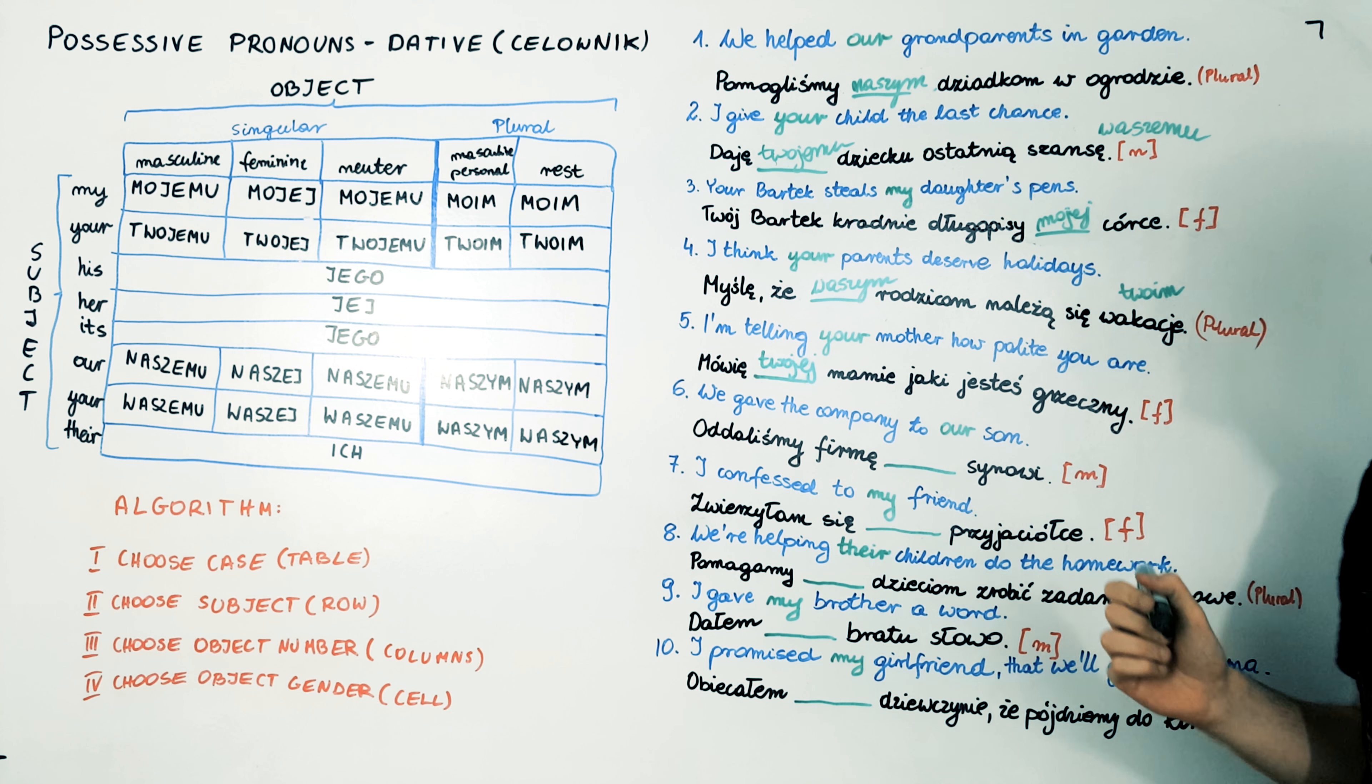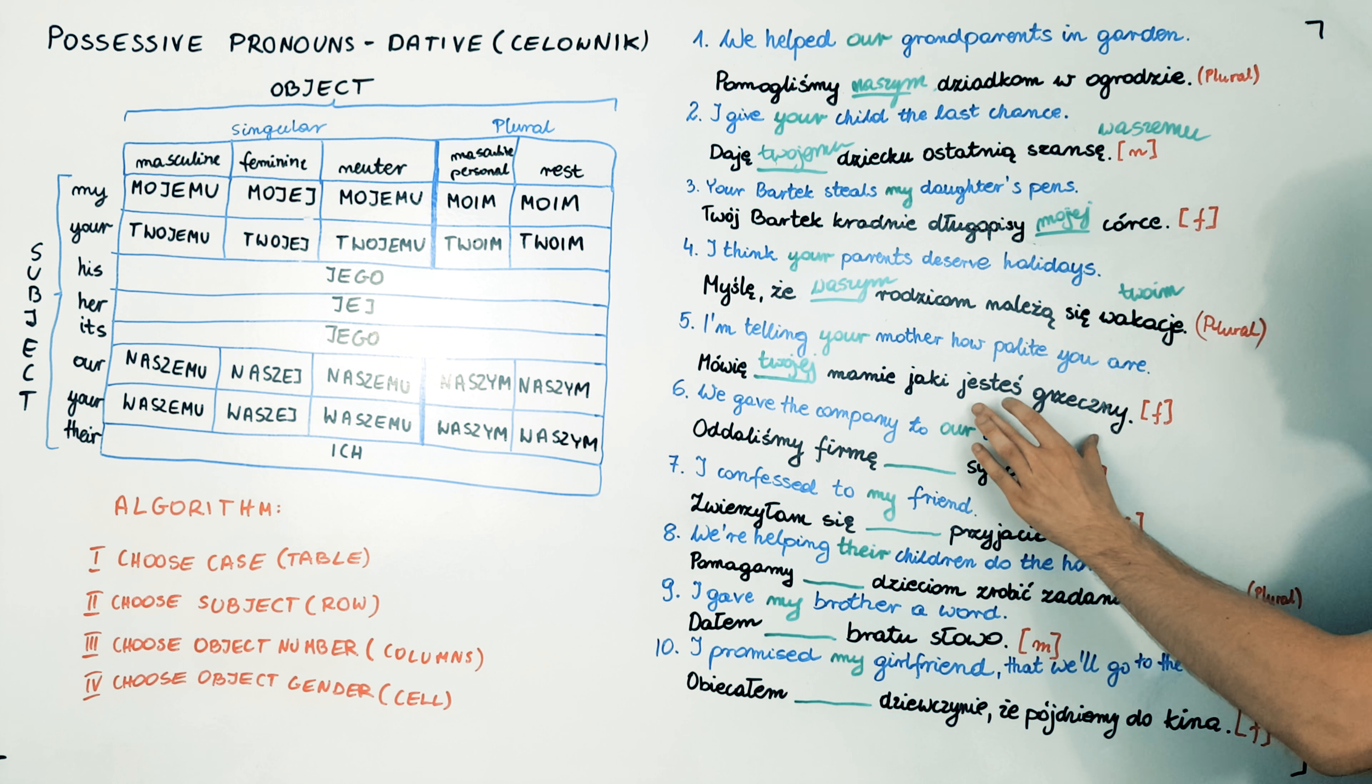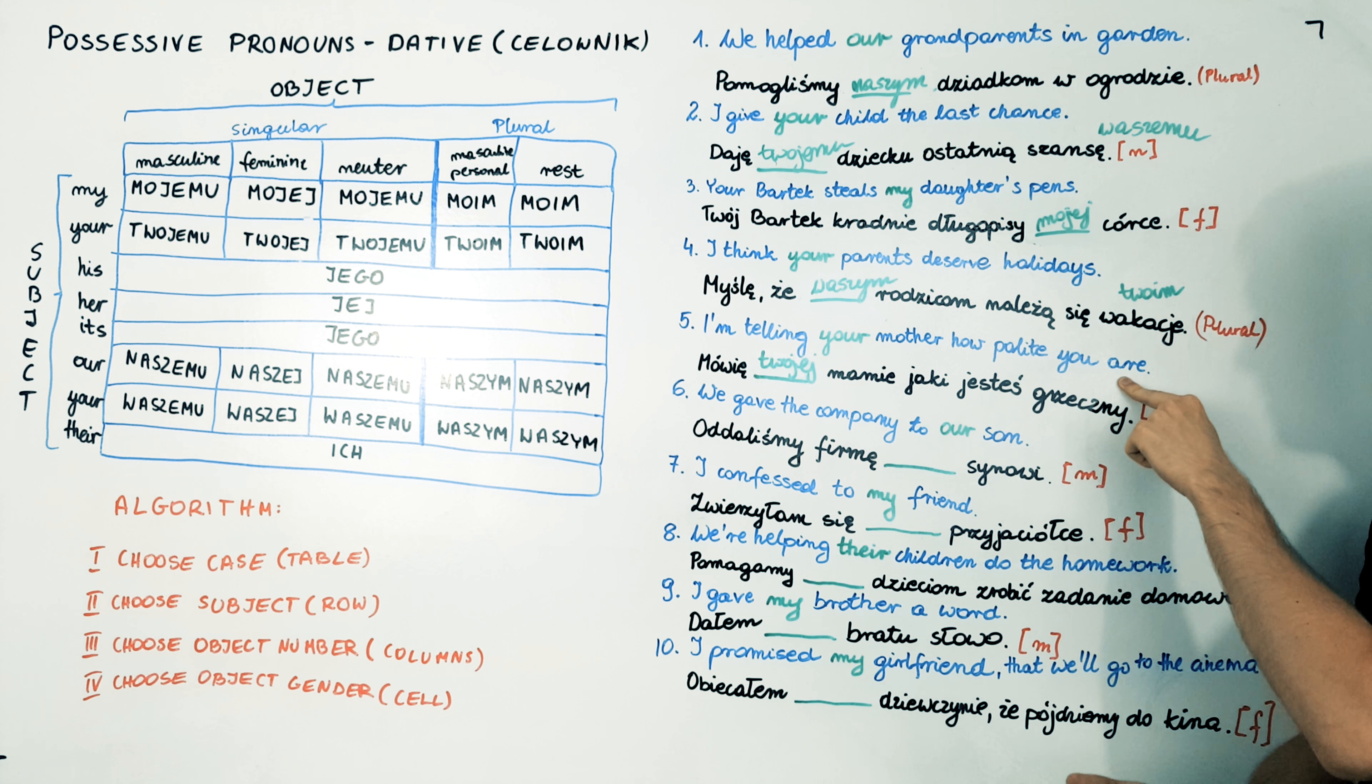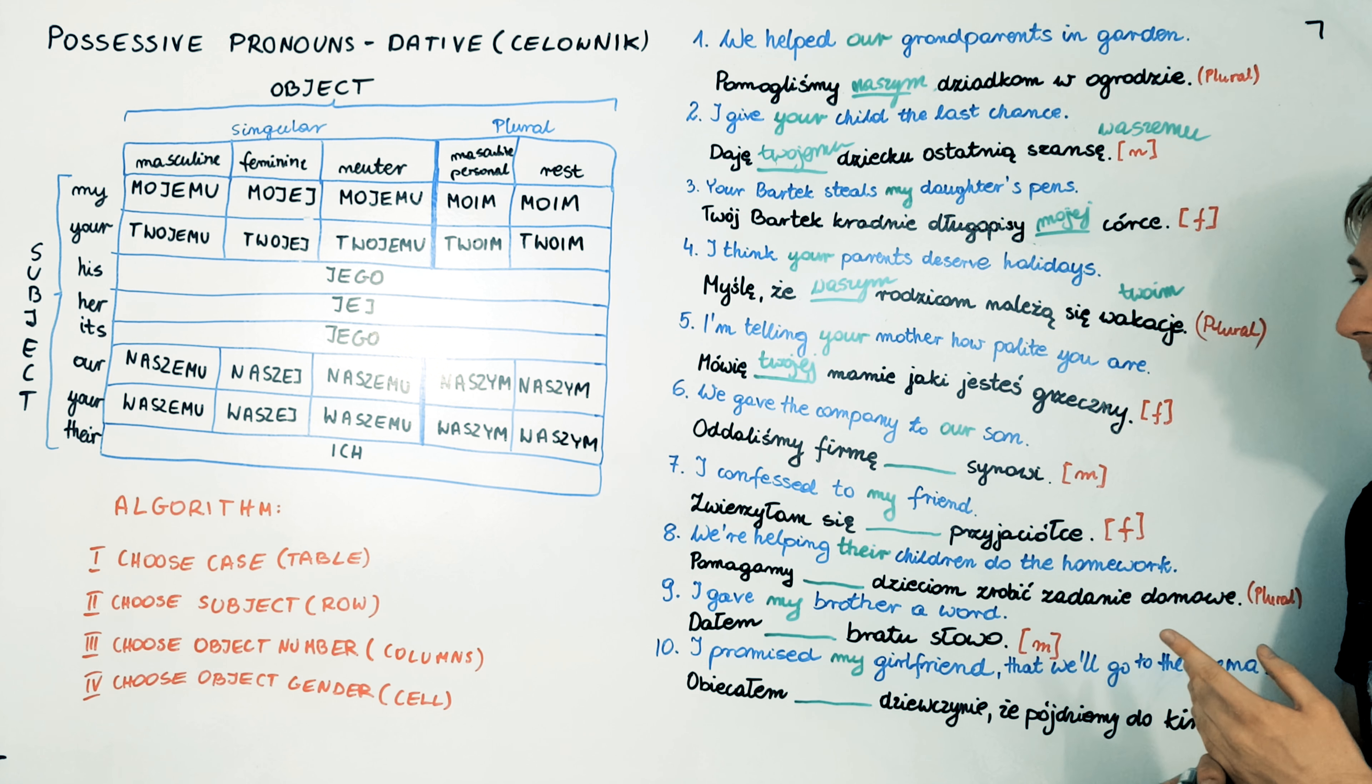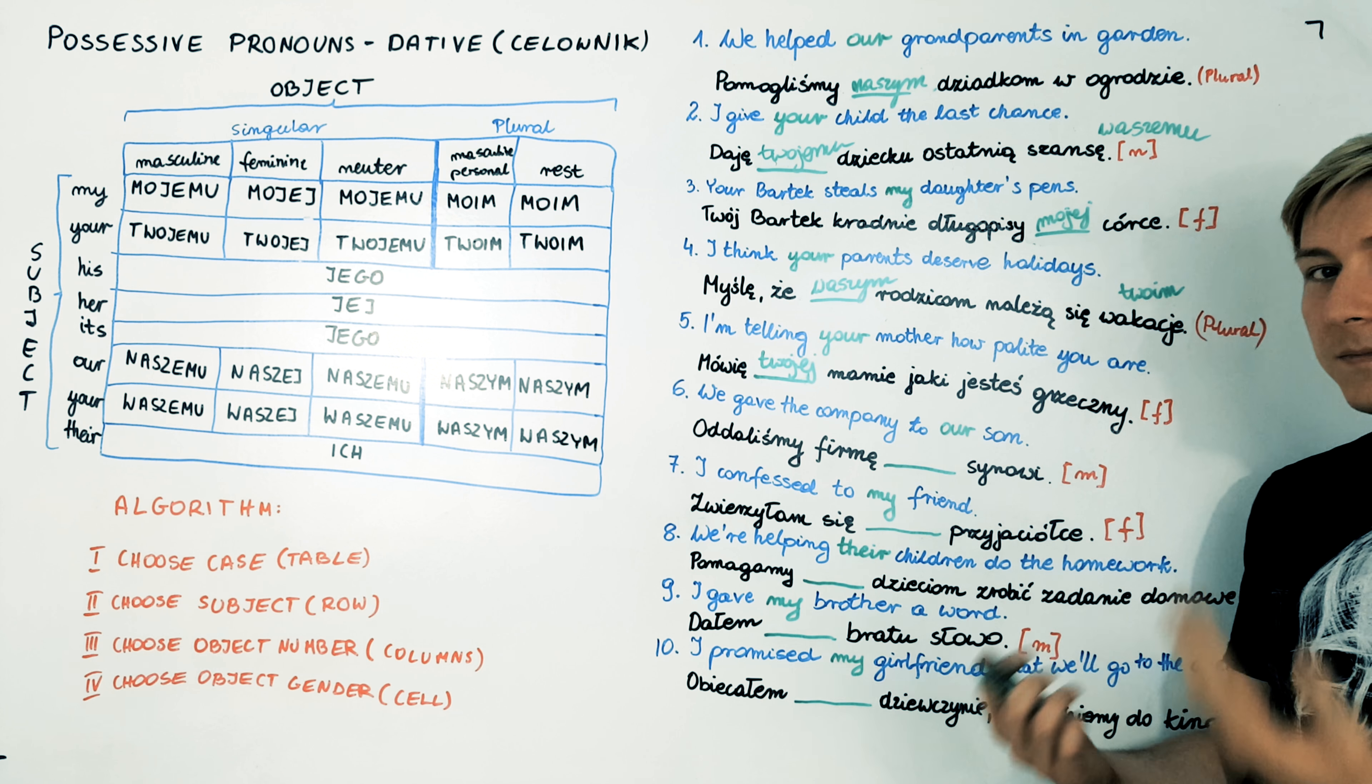Here you cannot say waszej because the second part of the sentence is translated as singular. Here in English you are is singular or plural depending on the context. But here, jaki jesteś grzeczny is only for singular. Okay. No, so you probably didn't know this but I will explain why this is singular in other videos.